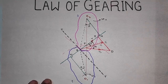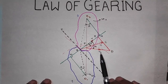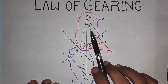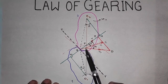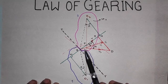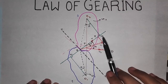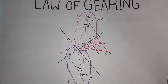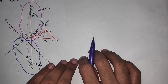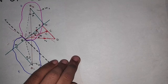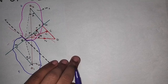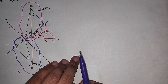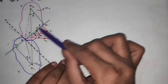Both directions QC and QD are drawn in the figure. Let V1 and V2 be the velocities of point Q on gear one (the pinion) and gear two (the gear) respectively. If the teeth are to remain in contact, then the components of these velocities along the common normal MN must be equal.